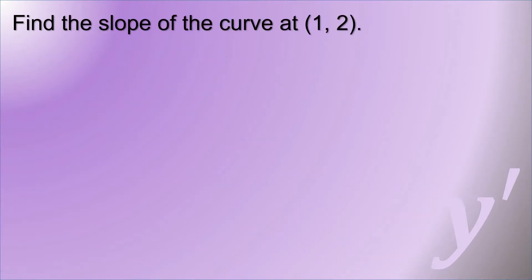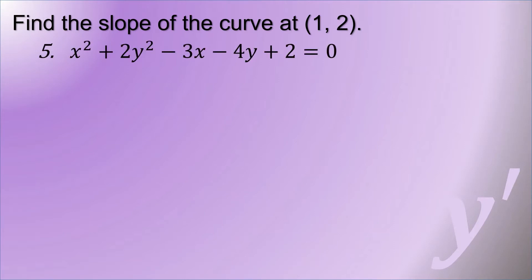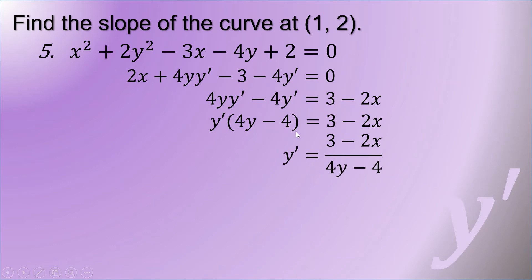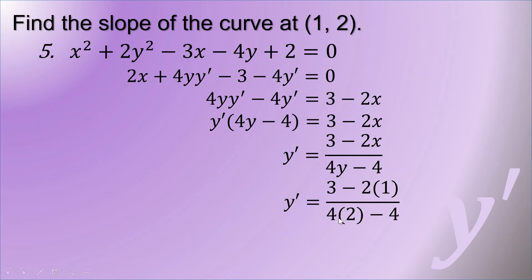We are going to find the slope of the curve at the point (1, 2), where the equation of the curve is x squared plus 2y squared minus 3x minus 4y plus 2 equals 0. Deriving gives 2x plus 4y y prime minus 3 minus 4y prime equals 0. Transferring terms without y prime to the right and factoring out y prime gives y prime times 4y minus 4. Dividing both sides by 4y minus 4, then substituting x equals 1 and y equals 2, the slope y prime equals 1 over 4.